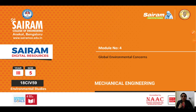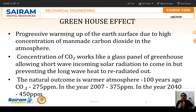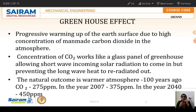In this session, in Module 4 on global environmental concerns, we are going to discuss greenhouse effect, climatic change, and human activity. The greenhouse effect is a natural process that warms the earth's surface. When the sun's energy reaches the earth's atmosphere, some is reflected back to space and the rest is absorbed and radiated by greenhouse gases, causing a progressive warming of the earth's surface due to high concentrations of man-made carbon dioxide in the atmosphere.